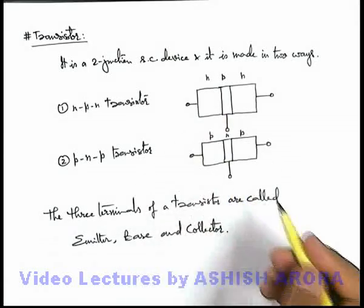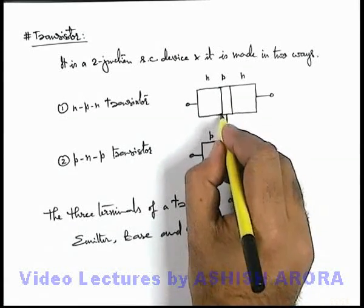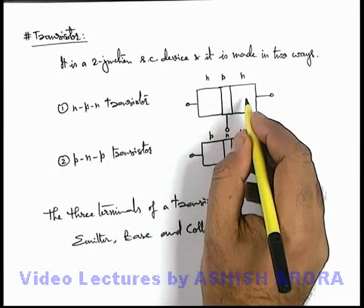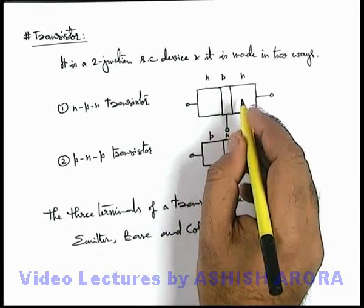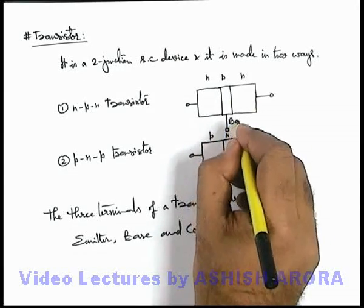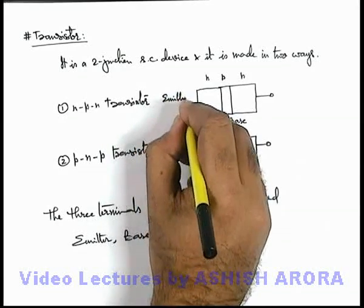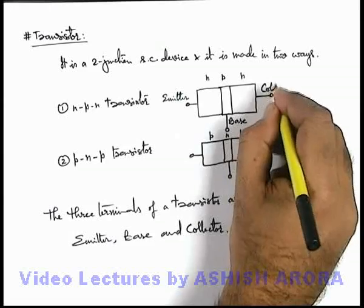In general on paper representation, the middle semiconductor which is sandwiched between the two similar kind of semiconductors on the two sides, this is called base. On the left side it is denoted as emitter, on the right side it is collector.